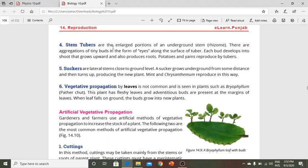Stem tubers are enlarged portions of underground stems. These are aggregations of tiny buds in the form of eyes along the surface of the tuber. Potatoes and yams reproduce through tubers.